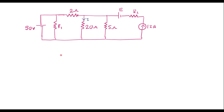We know that in superposition theorem, we are supposed to consider one source at a time. Here in this circuit, we have three sources: a 12 amp current source, voltage source E, and a 50 volt voltage source. First, let me consider the 50 volt source alone.